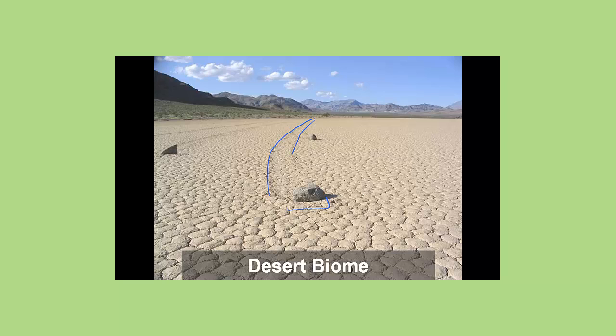These rocks, this is known as race rocks in Death Valley. And you can see the path this rock has taken. No one knows why they move, how they move, but you can see their movement based on the tracks they leave.